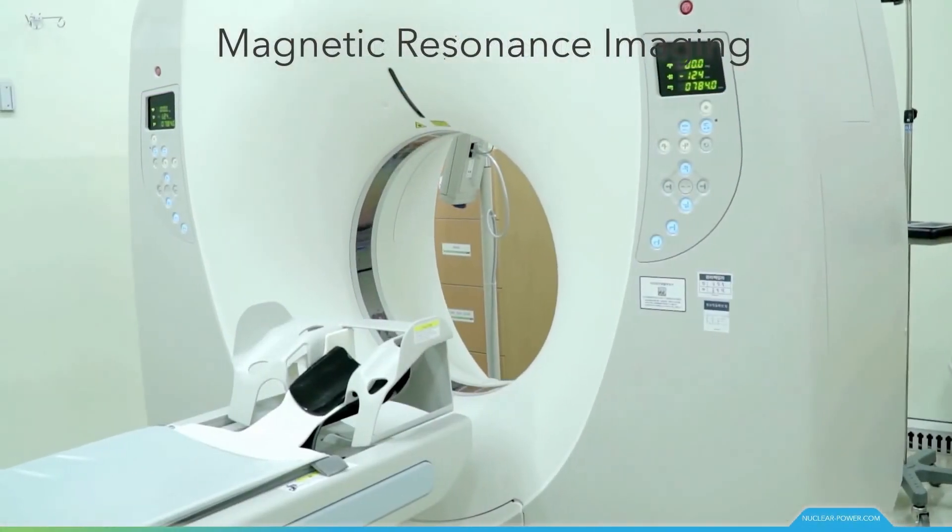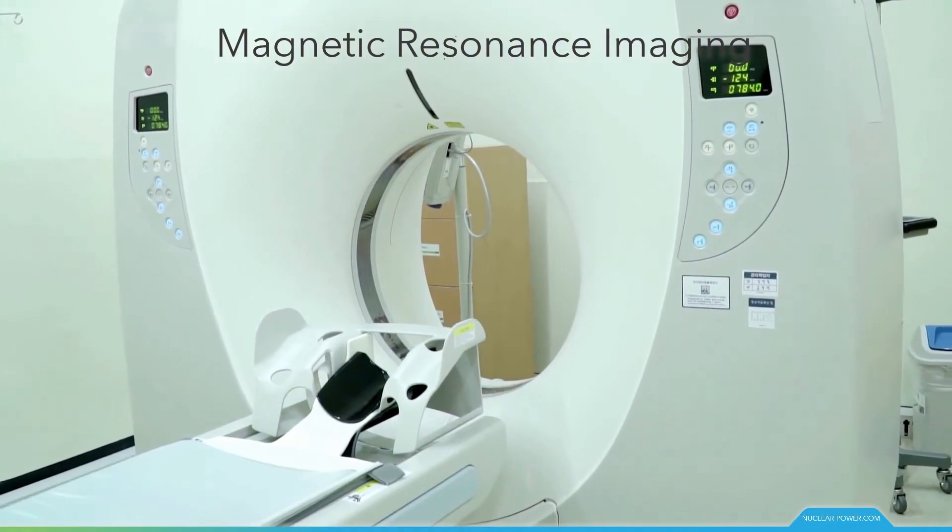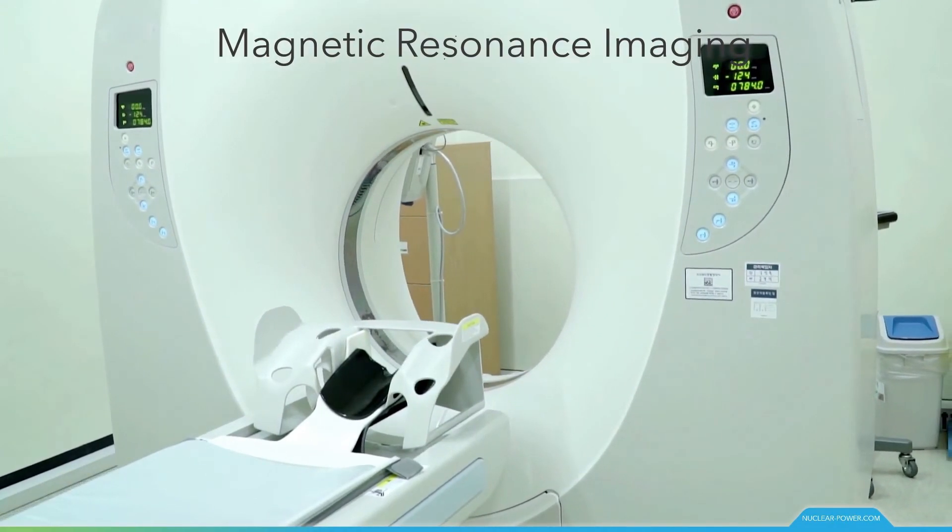Magnetic resonance imaging was originally called nuclear magnetic resonance imaging, but nuclear was dropped to avoid negative associations. Nuclear magnetic resonance is a physical phenomenon in which nuclei in a strong constant magnetic field are perturbed by a weak oscillating magnetic field and respond by producing an electromagnetic signal with a frequency characteristic of the magnetic field at the nucleus.